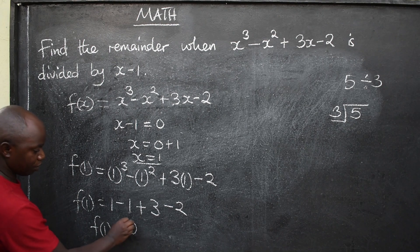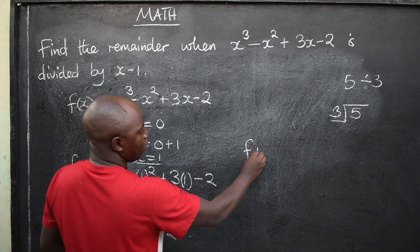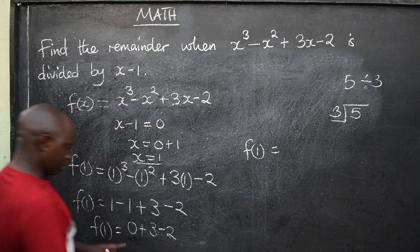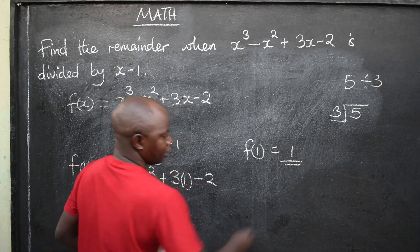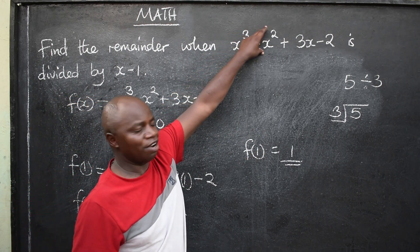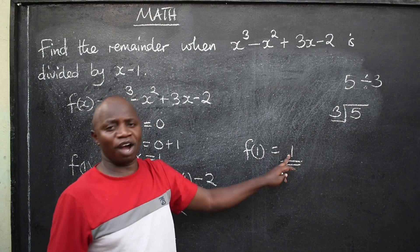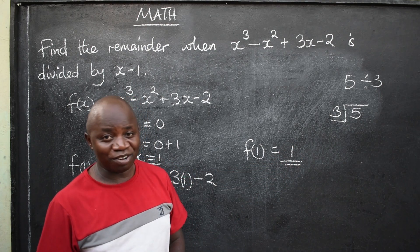Then, F1 will be equal to, 1 minus 1 is 0 here, plus 3, minus 2, meaning, my F1 will be equal to, this will give me 0, this will give me 1. I've seen that, meaning, when you divide this polynomial by this, the remainder is 1, just like that. Are you clear on that?